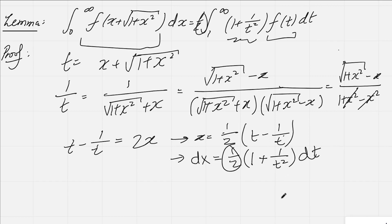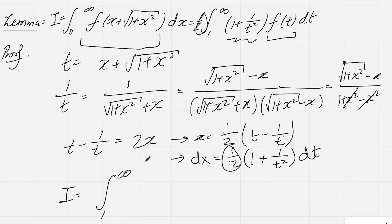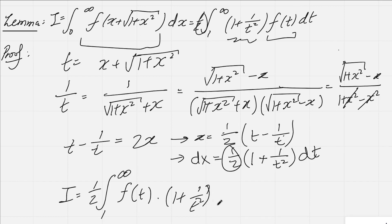Finally, calling the original integral I, we change our limits: when x = 0, t = 0 + √(1+0) = 1; when x → ∞, t → ∞. We replace f(x + √(1+x²)) with f(t), bring out the ½, and get ½ times the integral from 1 to infinity of (1 + 1/t²) f(t) dt. That proves the lemma.